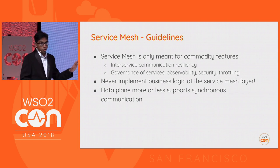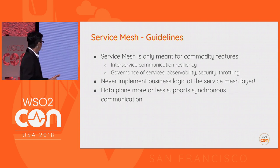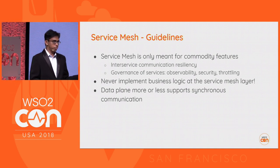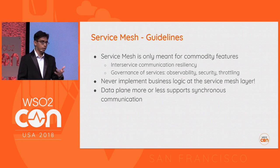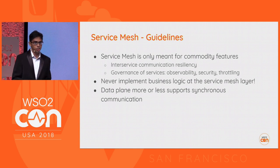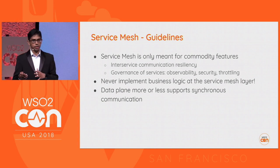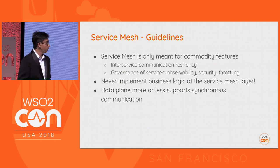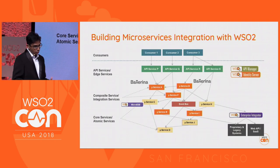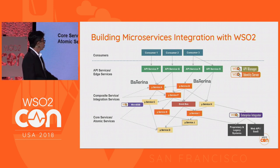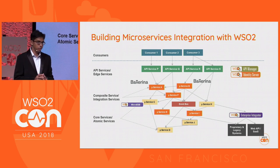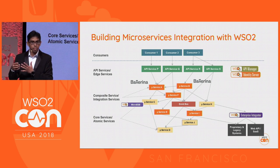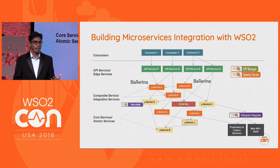We should not implement any business logic as part of the service mesh sidecar. Current implementations of service mesh have some limitations — most only support synchronous communication, though projects like Envoy and Istio have ongoing work related to asynchronous messaging, including bringing in Kafka or AMQP brokers. If you adopt service mesh into the same architecture, you don't have to change any of these interactions — service mesh is an infrastructure-related component, and you get all the resilient capabilities out of the box.